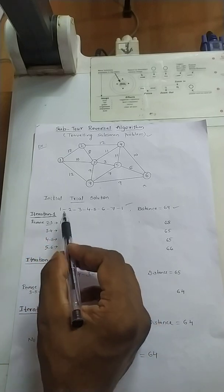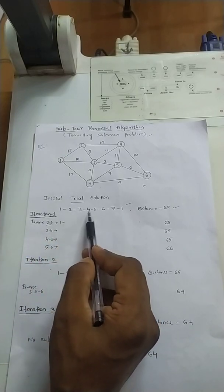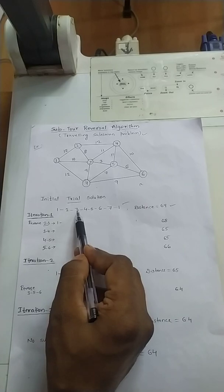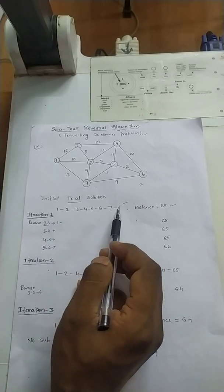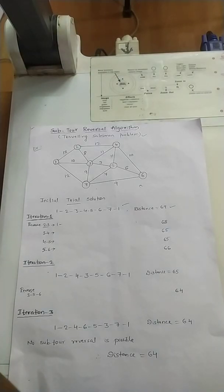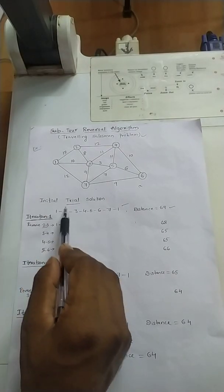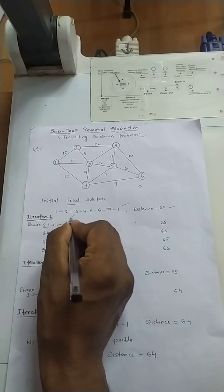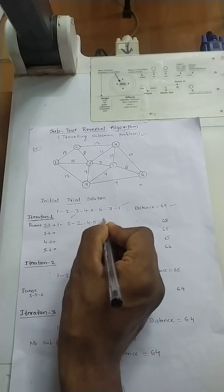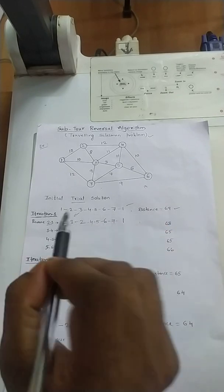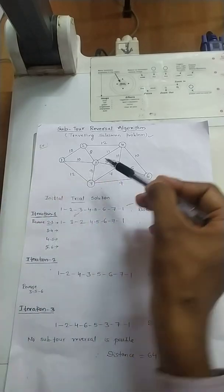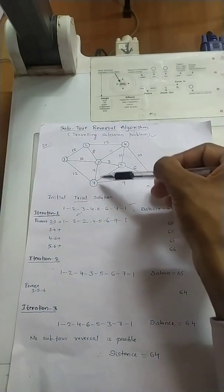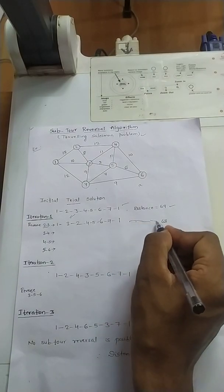In the first case, I will reverse nodes 2 and 3. So instead of the path 1, 2, 3, 4, 5, 6, 7, 1, I will visit 1, 3, 2, 4, 5, 6, 7, 1. We should check whether that path exists. Path 1 to 3 exists, 3 to 2 exists, 2 to 4 exists, and the rest follows. This path is valid and gives a distance of 68.